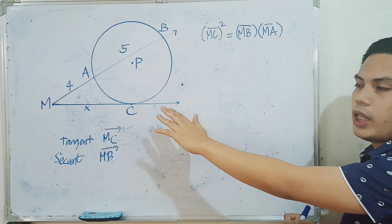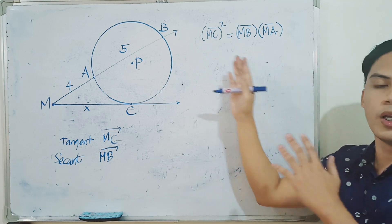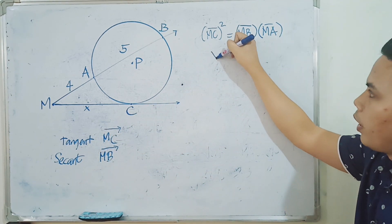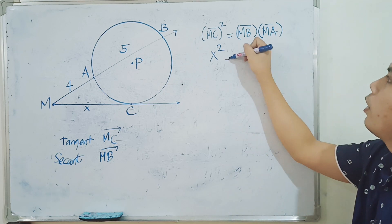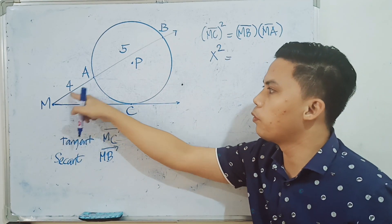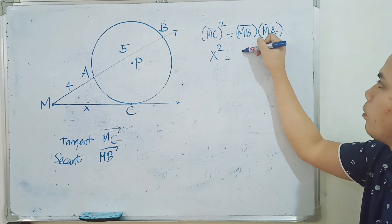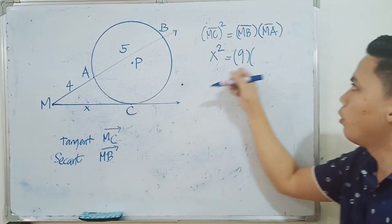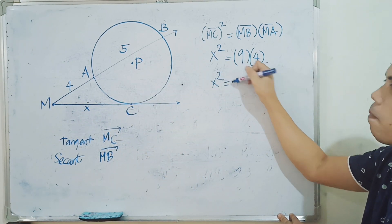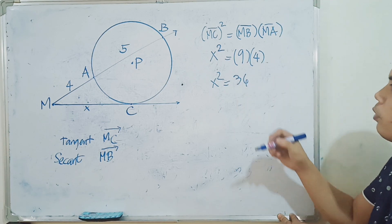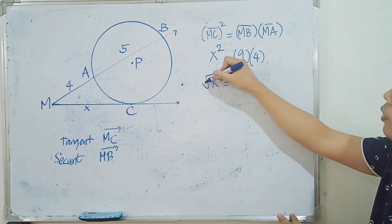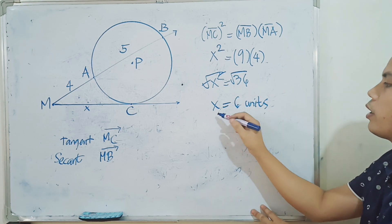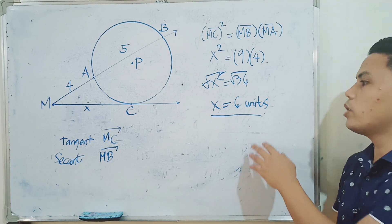Now let's solve for the missing length. The length of MC is what we need to find, so we have X squared. The length of segment MB is 4 plus 5, which equals 9 units. The external segment MA is 4 units. So X squared equals 9 times 4, which equals 36. Taking the square root of both sides, X equals 6 units. We take the positive value since we're talking about the length of a segment. This is our final answer.